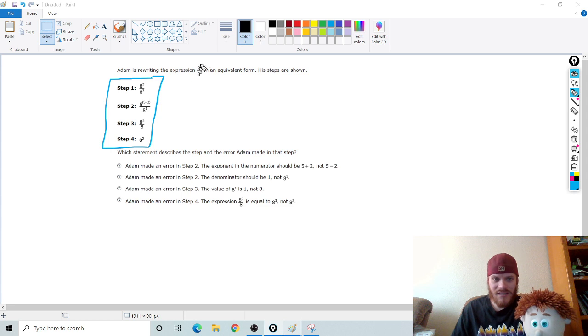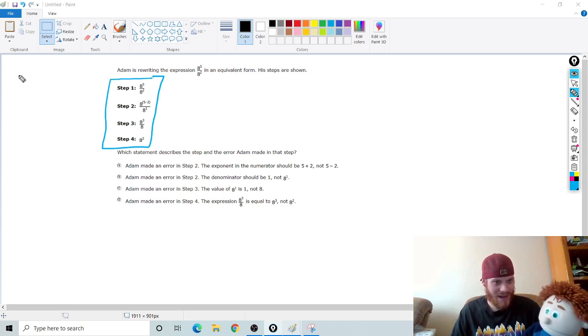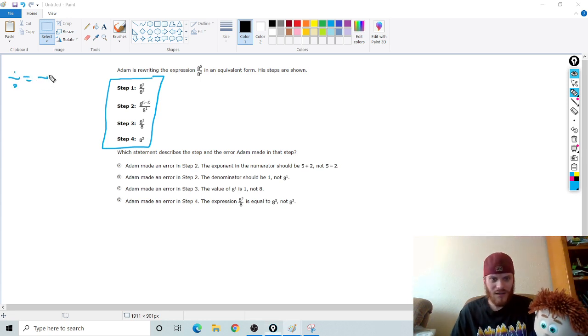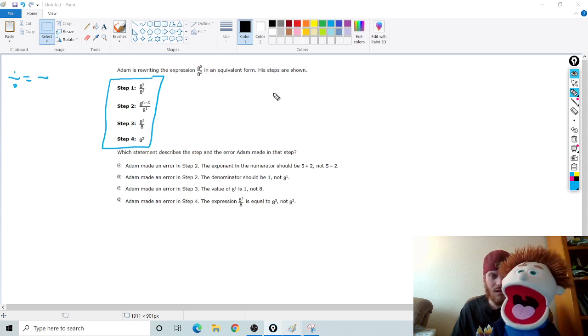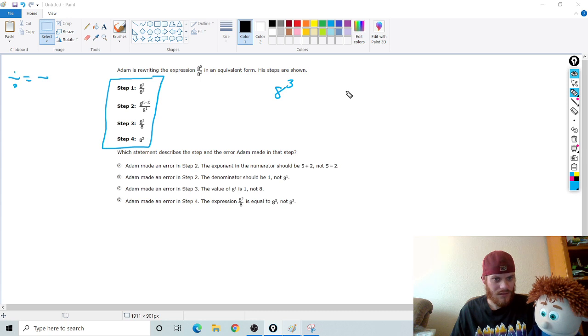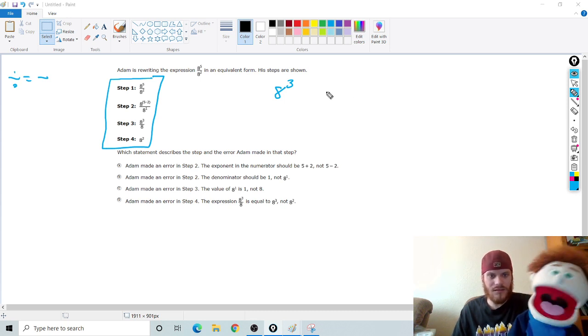This is just division of exponents, right? In multiplication, we added. In division, if the bases are the same, what do you think we do? Oh, you subtract. We do subtract. Good call. So this is pretty straightforward. Watch this. 8 to the 5th over 8 to the 2nd would be what? Well, you just have to subtract them, so 8 to the 3rd. Exactly. 8 to the 3rd.